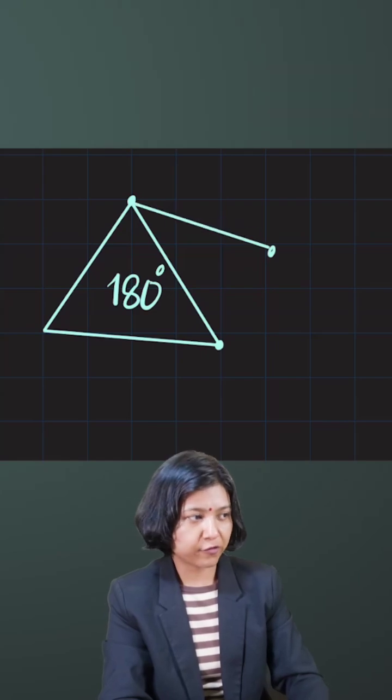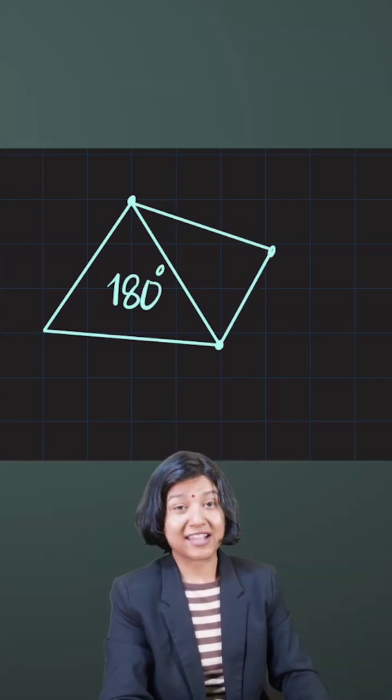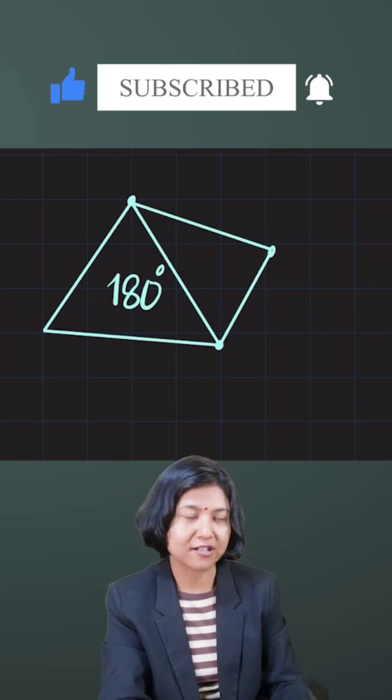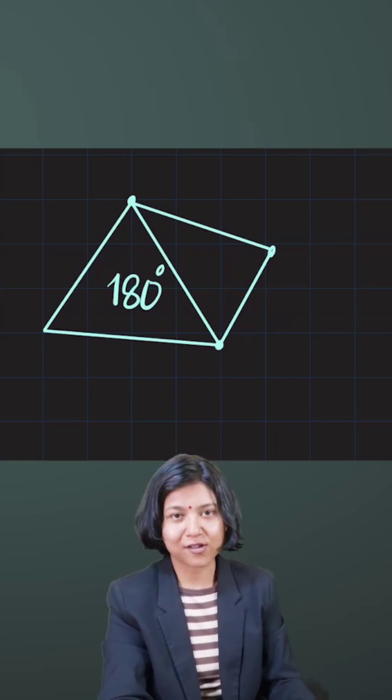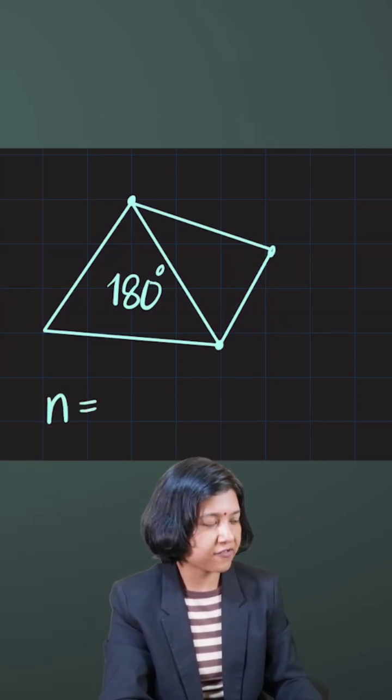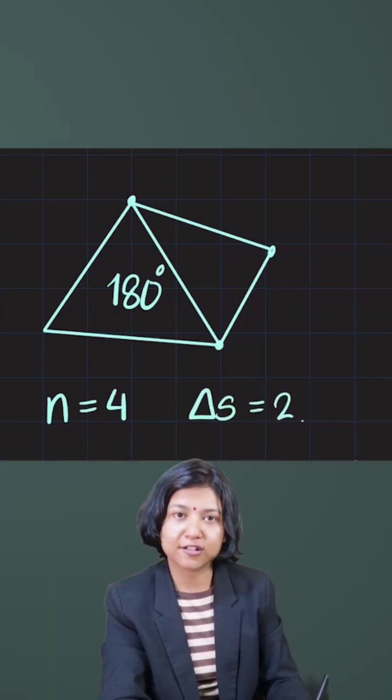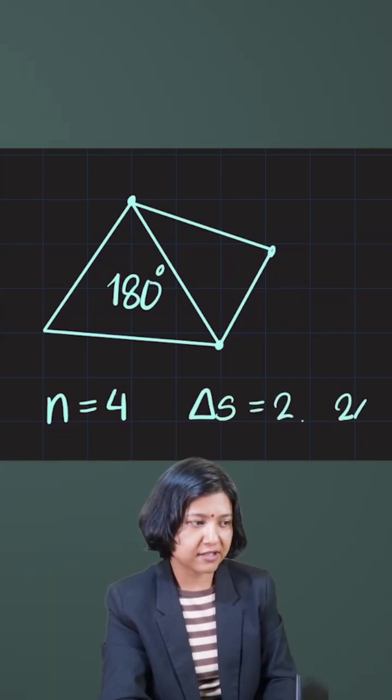What happens when your fourth point is connected with the existing three points? I get the next polygon, which is a quadrilateral. Now a quadrilateral has four sides, so when the number of sides are four, the number of triangles you have is two. So sum of angles has to be two times 180, which gives me 360.